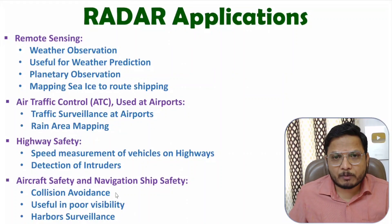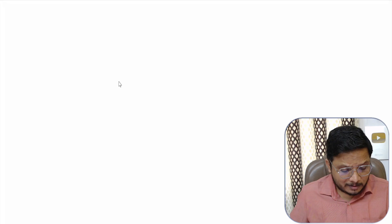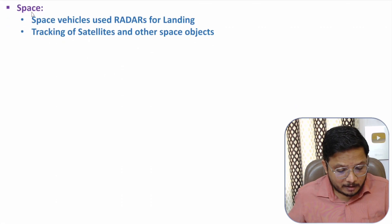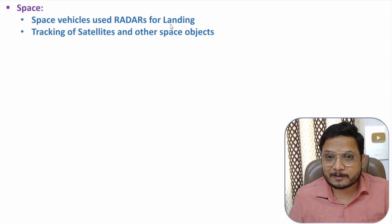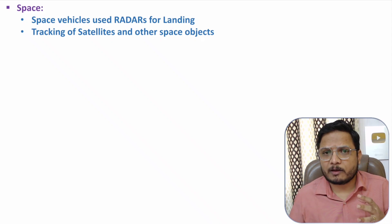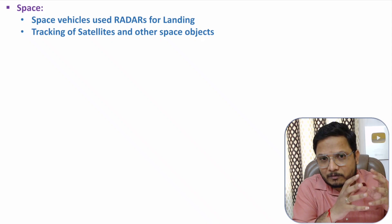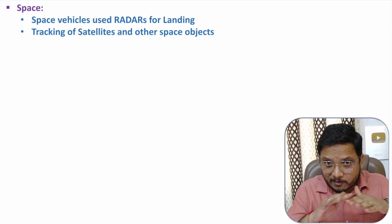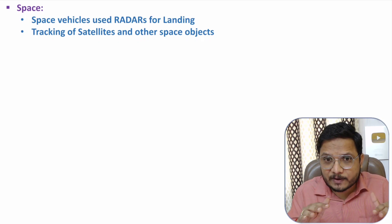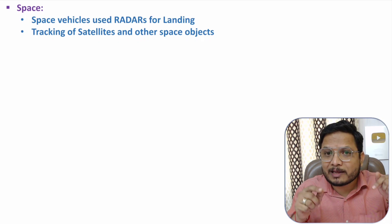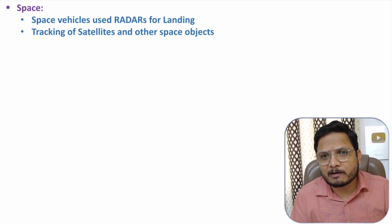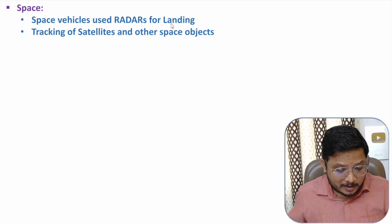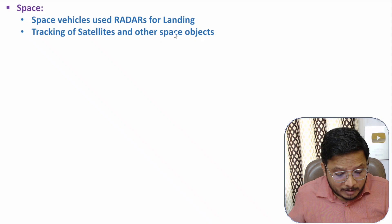The next application is based on space, where we can use radar for landing on other planets. For example, on the moon we have landed ISRO's vehicle, where with the use of radar we can identify the surface — whether it is flat and feasible for landing. As well as in tracking of satellites and some other objects, we can use radar in space.